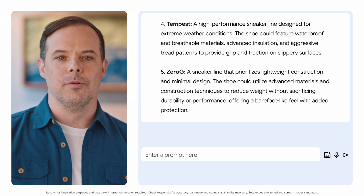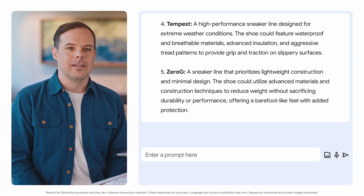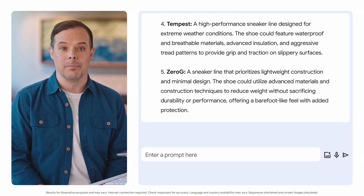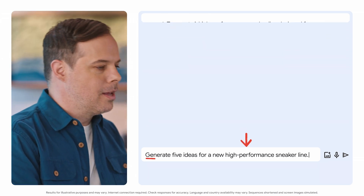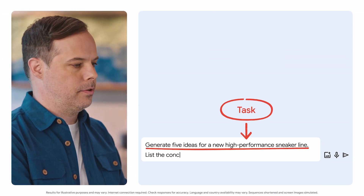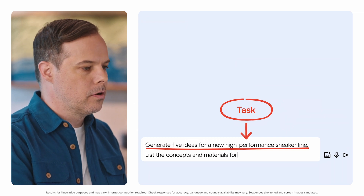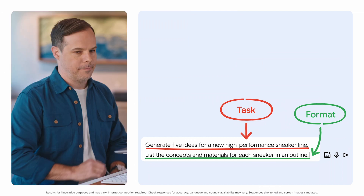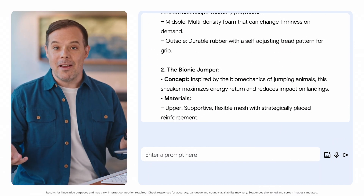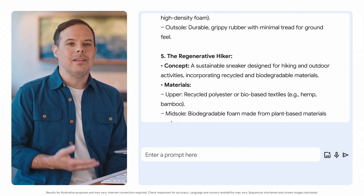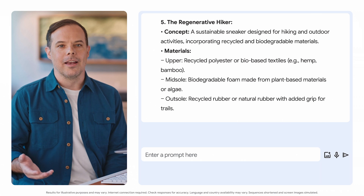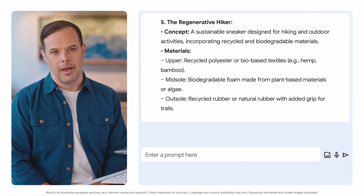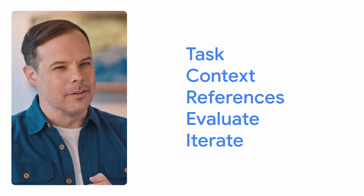Let's add some more details like our desired format and a more specific task for the tool to complete: 'List the concepts and materials for each sneaker in an outline.' That's much better. Now we have a set of unique ideas for a sneaker line that includes the materials for each shoe, and it came in our preferred format. I think we can do even better.